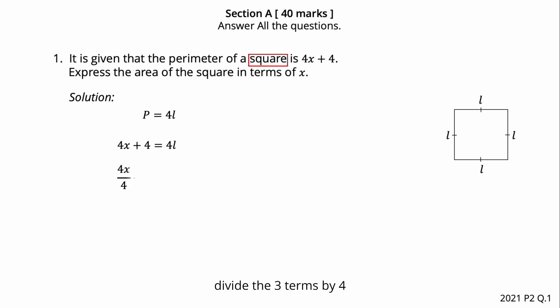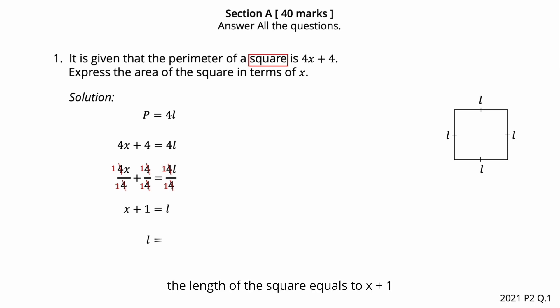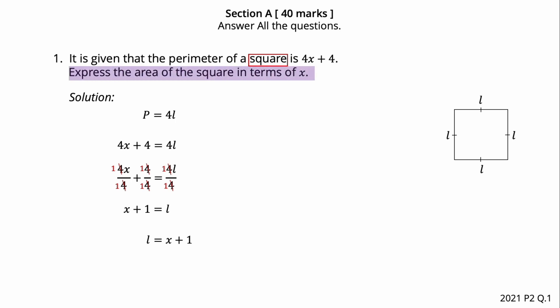Divide all three terms by 4: 4 divided by 4 equals 1, so x plus 1 equals L. Therefore, the length of the square equals x plus 1. Now, express the area of the square in terms of x.